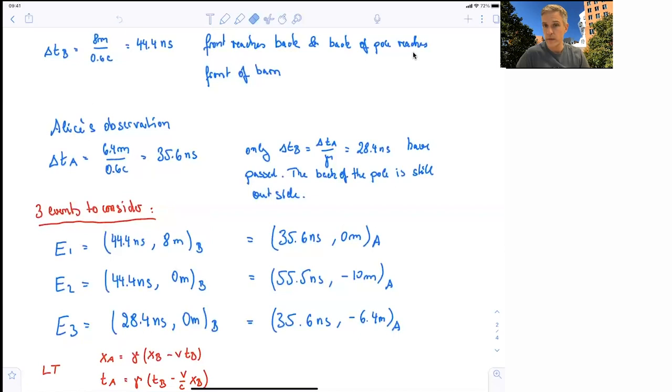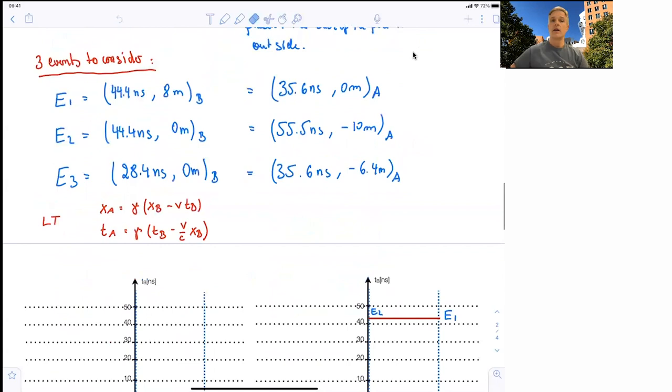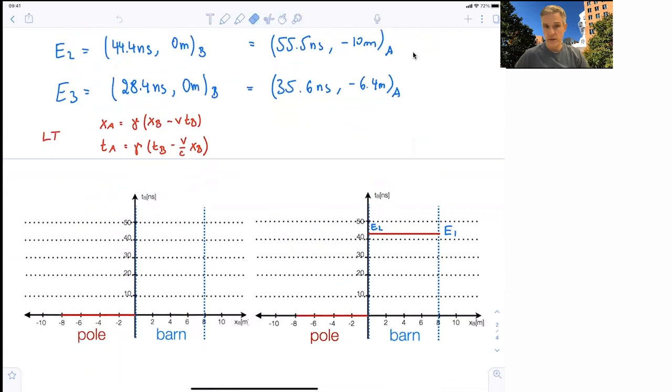So the minus 6.4 meters tell you very clearly what we just already said. The back of the pole is still outside. So that's the quantitative or numerical kind of evaluation. And we can also show the very same thing in the space-time diagram.